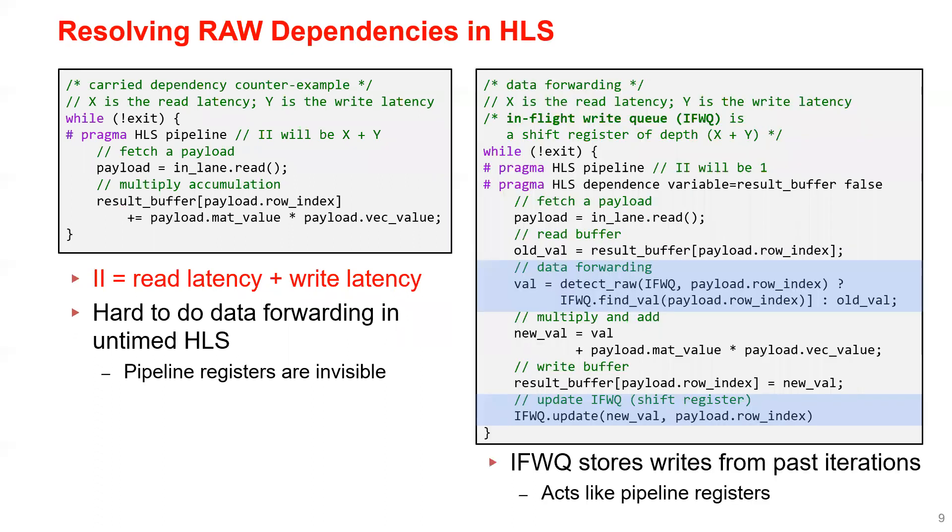In HiSparse, we use a data structure called the in-flight write queue to store the writes issued in the past iterations. The IFW queue is made of a shift register which will be updated once a write is issued. Therefore, this queue acts exactly like the pipeline registers, so we can use the information stored in this queue to implement data forwarding.